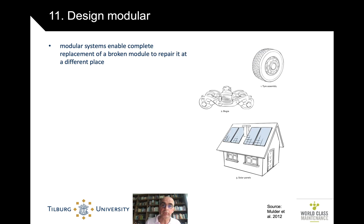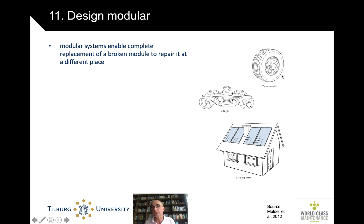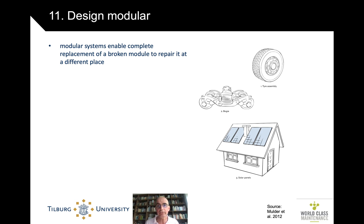Design modularly so that it's easy to replace an entire system. A bogey — an assembly at the bottom of rolling stock — can be replaced in one go: swap and go, and take time to fix it in a repair shop while the rolling stock itself keeps moving. The classic example is a tire. Solar panels are also often modular — you can take out one panel without affecting the rest, and they use a standard size.